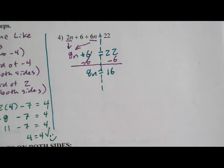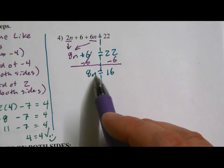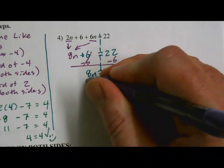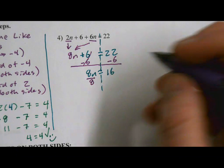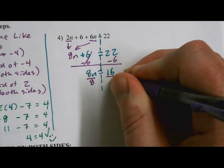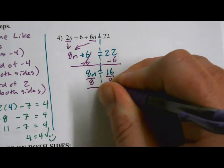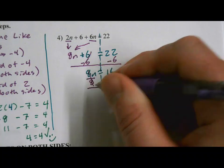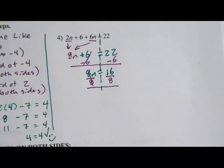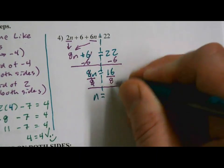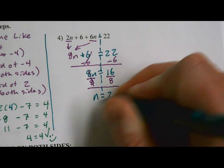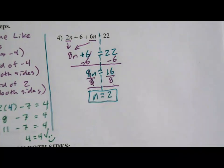Alright, we almost have that n by itself. We just need to get rid of that 8. That 8 is multiplying by the n. So we will divide by 8. Multiply by 8, divide by 8. Those are opposites. They'll cancel. So let's divide by 8 on both sides. 8 divided by 8. Those will cancel. Leaving us with just 1n. Bringing down our equals, we have 16 divided by 8, which is 2. So I think my answer is n equals 2. But we're going to check that solution in just a moment.